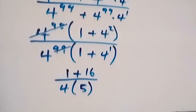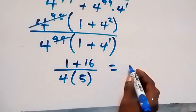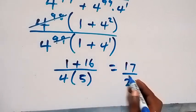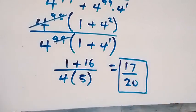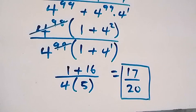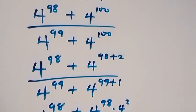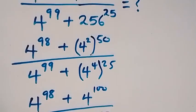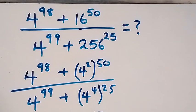So we have 1 plus 16, that's 17, over 4 times 5, that's 20. The final answer to this problem is 17 over 20. Thank you for watching — don't forget to subscribe for more exciting videos, turn on the notification bell, see you next class, bye for now.